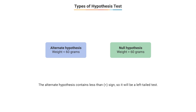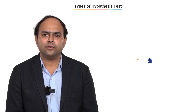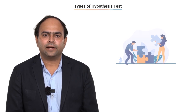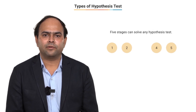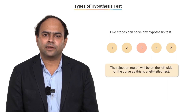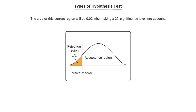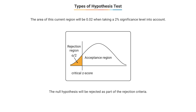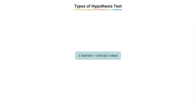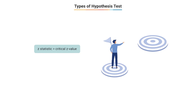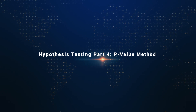For the left-tailed test, the rejection region lies on the left side of the curve. Since we are considering a 2% significance level, the area of the rejection region is 0.02. The critical z-value corresponds to this area of 0.02, and you reject the null hypothesis if your z-statistic falls outside this rejection region — that is, if the z-statistic is less than the critical z-value. In the next discussions, we'll learn about another approach known as the p-value method.